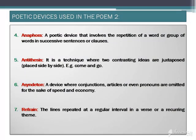The first of the four new devices is anaphora. Anaphora is a poetic device that involves the repetition of a word or group of words in successive sentences or clauses. For example, in the first stanza, the word 'I' appears in the first line and is repeated in the second line. In stanza two, the word 'by' appears in the first line and again in the third line. Both are examples of anaphora.